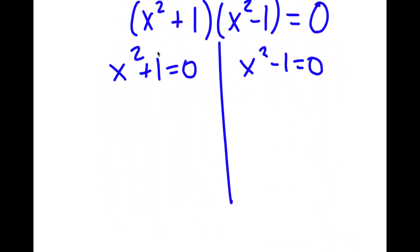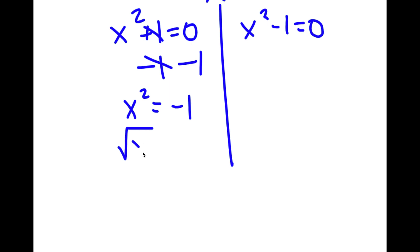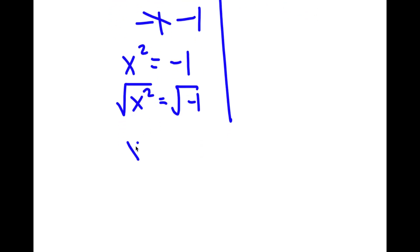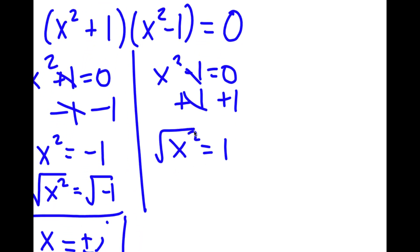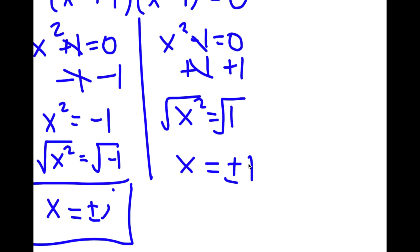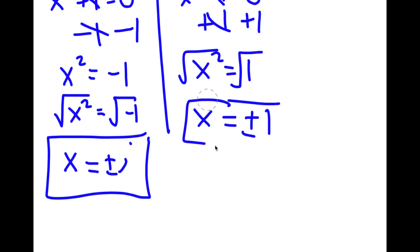For x squared plus 1 equals 0, subtracting 1 on both sides gives x squared equals negative 1. Taking the square root, x equals plus or minus i. For x squared minus 1 equals 0, adding 1 on both sides gives x squared equals 1. Taking the square root, x equals plus or minus 1. So these are my four solutions to this problem.